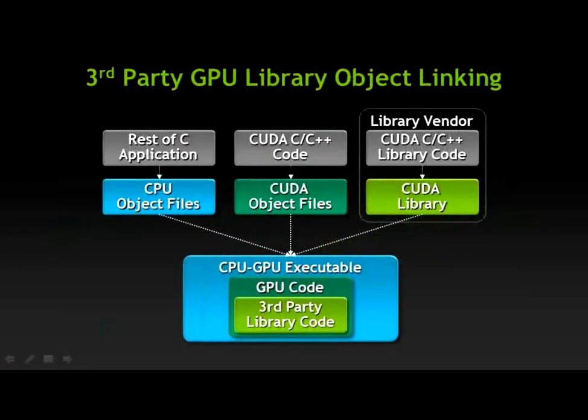Thirdly, we have support for GPU library and object linking. This allows the user to separately compile the individual portions of their GPU code and link them together into one GPU application. It also enables third-party libraries to compile code and share objects and libraries with other GPU users to directly link and support GPU callable libraries.